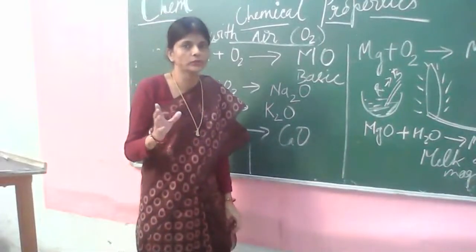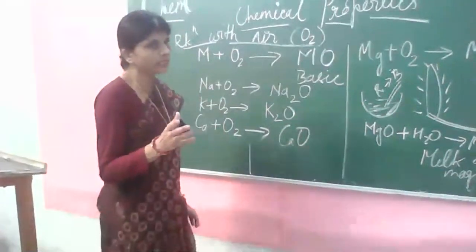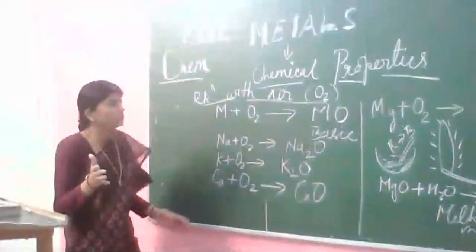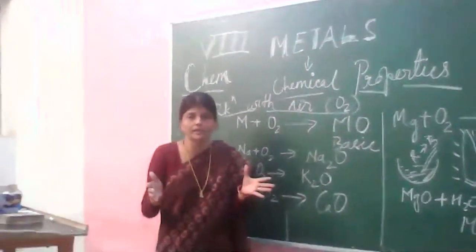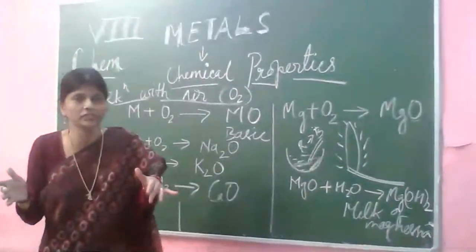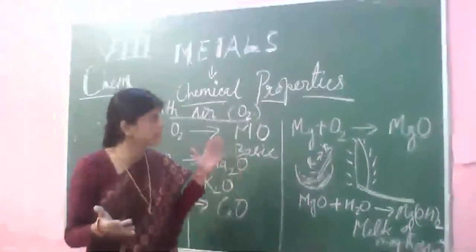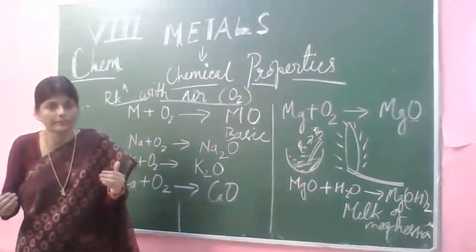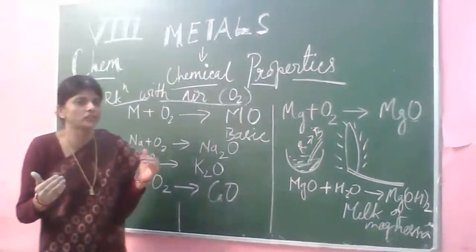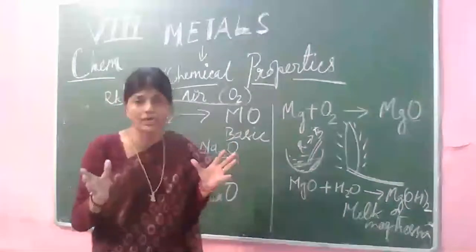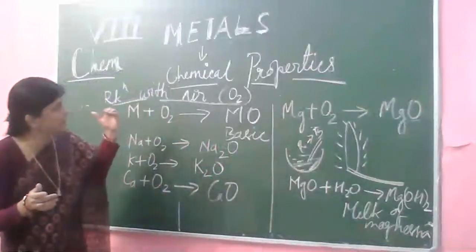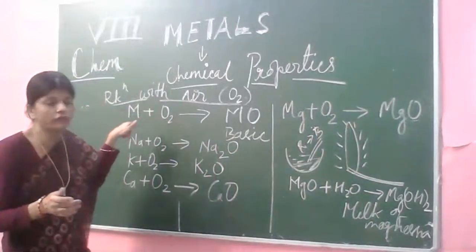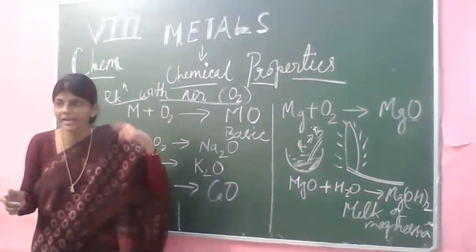Today I will take up the chemical properties of metals only. Because here we are not going to do a comparative study — we are individually studying about metals. Because in the chemical properties, the comparative study is just not possible. Chemical property is actually the study of actual chemistry. We study chemical combinations, and the chemical combinations come under the chemical properties.